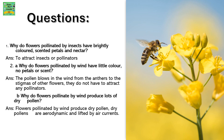Why do flowers pollinated by insects have brightly colored, scented petals and nectar? This is to attract insects or pollinators. Why do flowers pollinated by wind have little color, no petals or scent? Because the pollen blows in the wind from the anther to the stigmas of other flowers — they do not have to attract any pollinators.